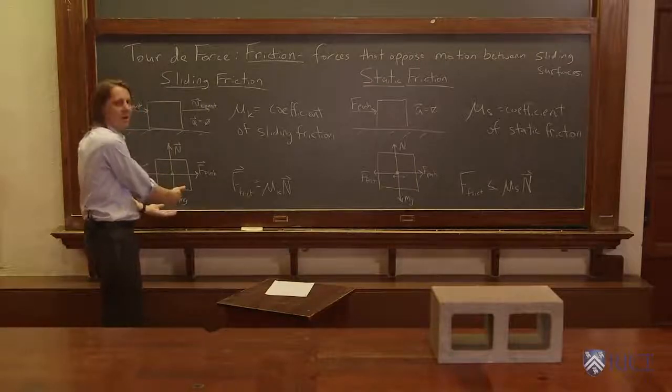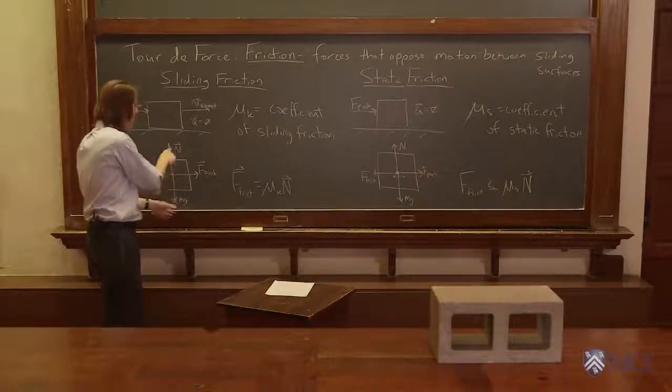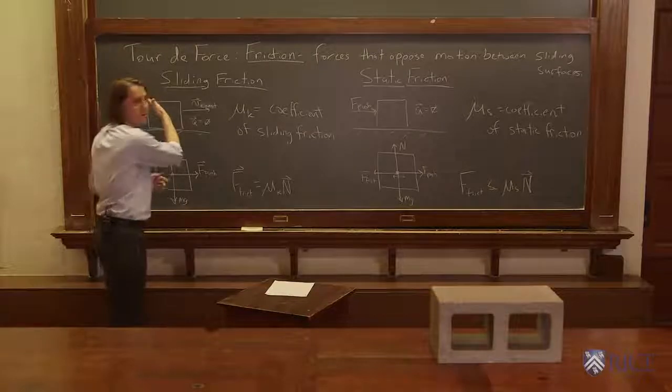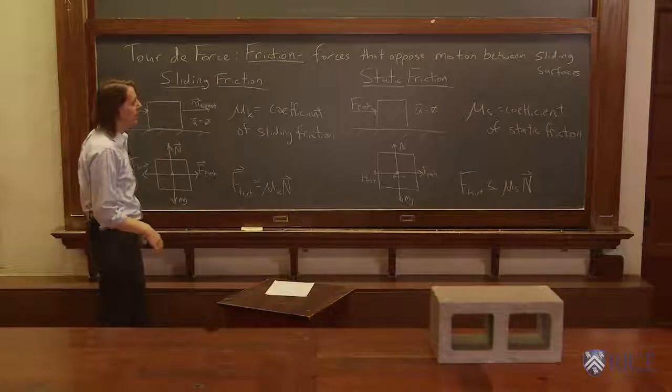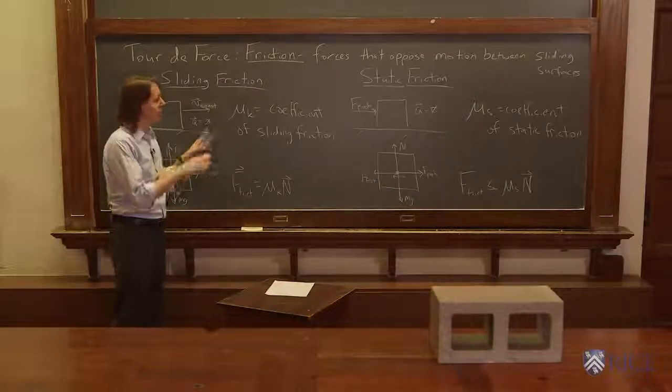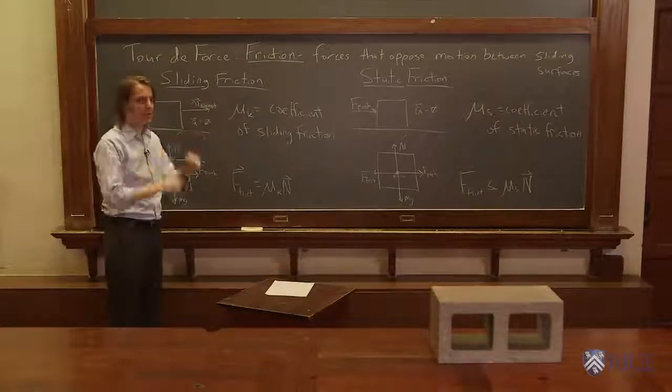You could say, why don't we just put mg there? This is a case where mg equals the normal force. On an incline, that's not true. On an incline, the normal force is smaller because it's at an angle, as we've looked at already. So the reason we use n is so that you can apply this formula in all kinds of different cases.